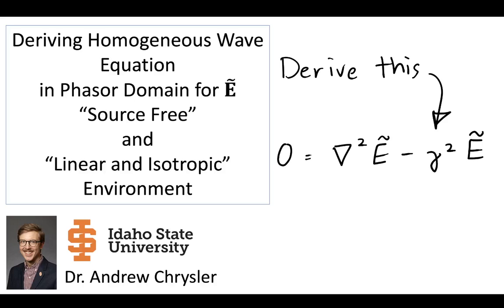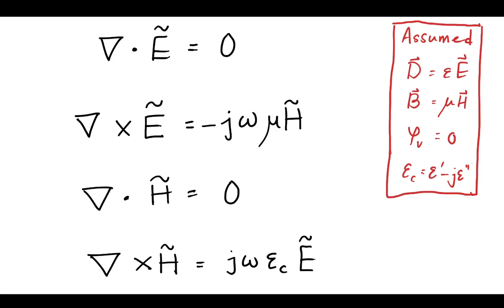Now let's derive the homogeneous wave equation for the electric field in the phasor domain. In the previous videos, we made a couple assumptions that are going to help us here. Recall that we see the tilde on our e's and our h's. This, in the Ullaby textbook, means that we are in the phasor domain.